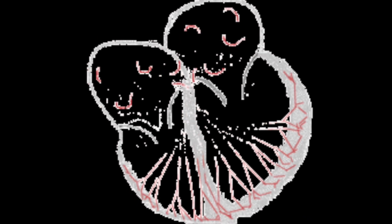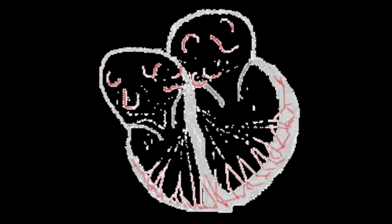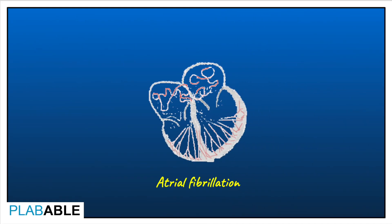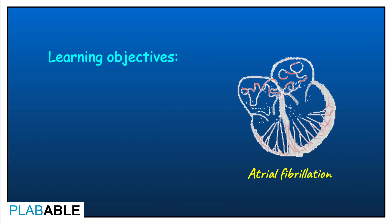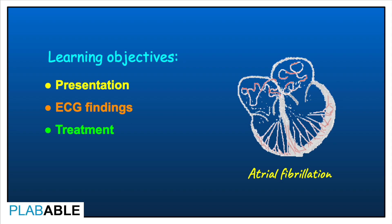Atrial fibrillation is the most common sustained cardiac arrhythmia, and estimates suggest that its prevalence is increasing. In this video from Plavable, we'll dive into atrial fibrillation and learn what the typical presentation of a patient is, what it looks like on an ECG, and how to manage it as a junior doctor.